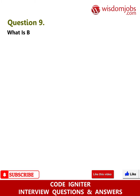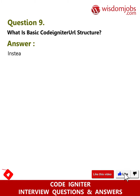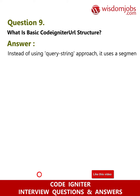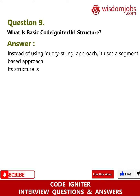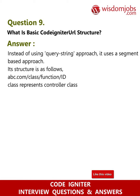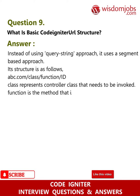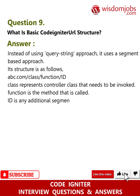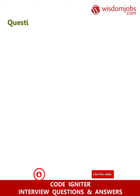Question 9: What is the basic CodeIgniter URL structure? Answer: Instead of using a query string approach, it uses a segment-based approach. Its structure is: abc.com/class/function/id. Here, 'class' represents the controller class to be invoked, 'function' is the method that is called, and 'id' is any additional segment passed to the controller.